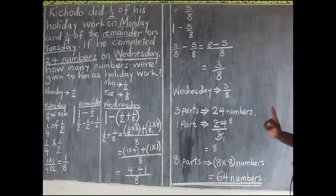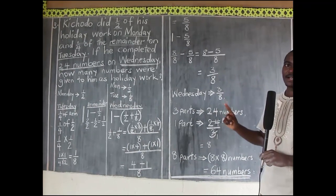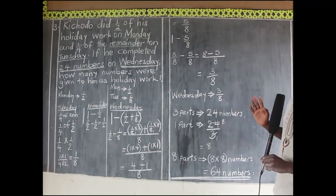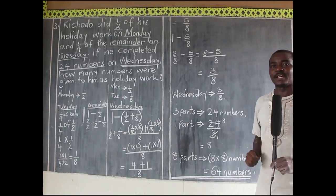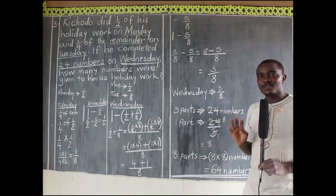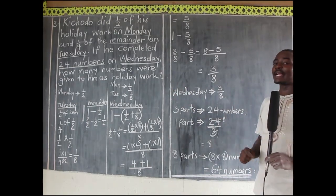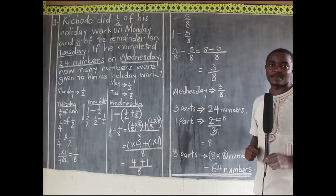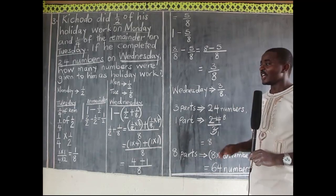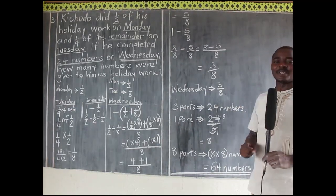The holiday work had 64 numbers in total. This is how we approach such problems. It is very important to read those questions carefully, especially where you see the word 'of' or the word 'remainder.' After looking at this example, I know you can attempt the activity. Follow the examples very well and you will get them correct. Thank you so much for viewing — let's meet in the next lesson.